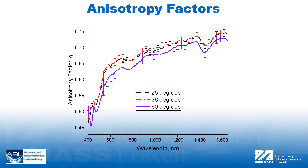Anisotropy factors were slightly lower at 60 degrees Celsius than at 25 and 36 degrees Celsius. This finding is in accordance with the explanation for changes in scattering coefficients, with tissue coagulation causing destruction of larger scatterers and homogenization of blood vessel walls and collagen bundles.